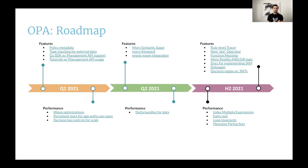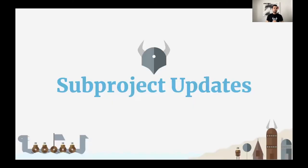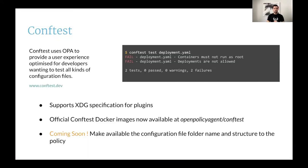This roadmap is publicly available on GitHub and we encourage you all to check it out. Now let's get some updates from subprojects, starting with ConfTest. ConfTest is a utility that helps you write tests against structured configuration data. ConfTest became part of the OPA family last year and we'd like to share the latest from the project.